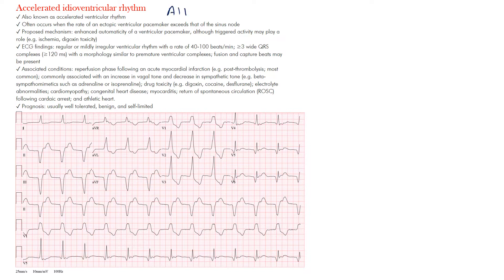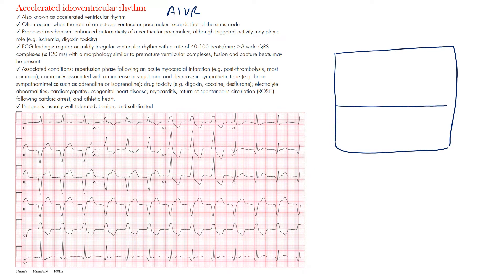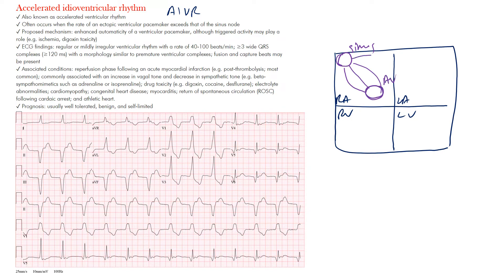AIVR is a rhythm that occurs because an ectopic focus in the ventricles is exceeding the rate of the sinus node. Looking at the heart, we have the right atrium, left atrium, right ventricle, and left ventricle. The conduction system includes the sinus node, internodal pathways, AV node, Bachmann bundle, His bundle, right bundle branch, and left bundle branch subdividing into left anterior and posterior fascicles, transmitting impulses to the cardiomyocytes.